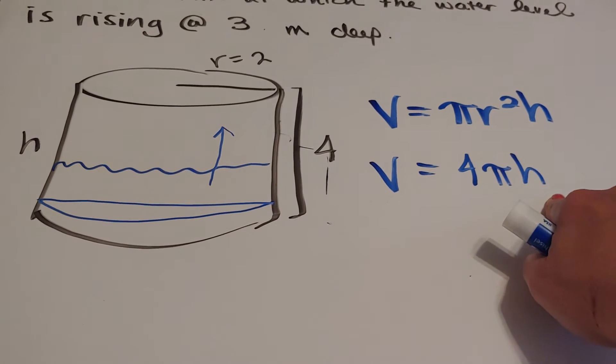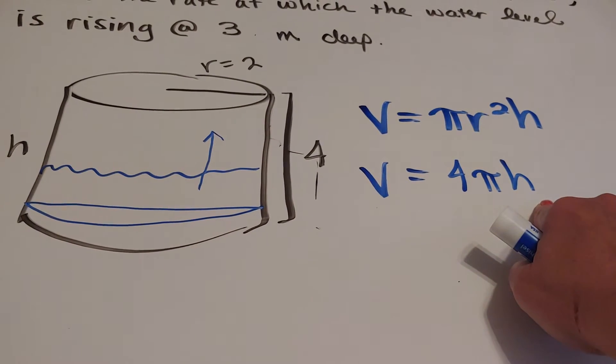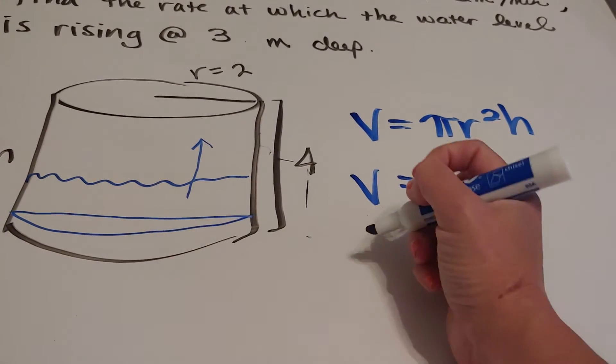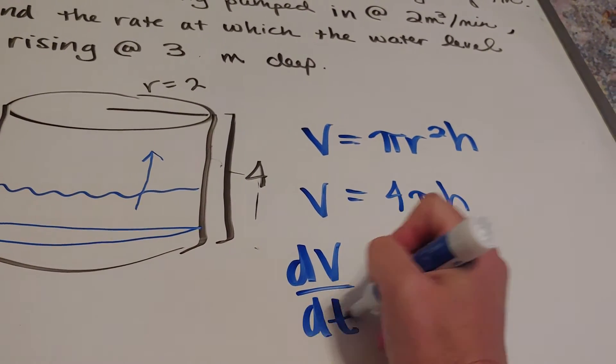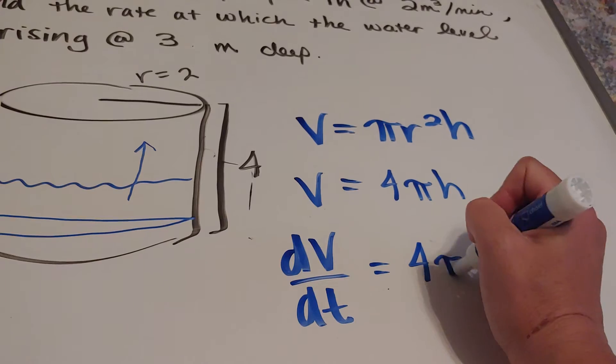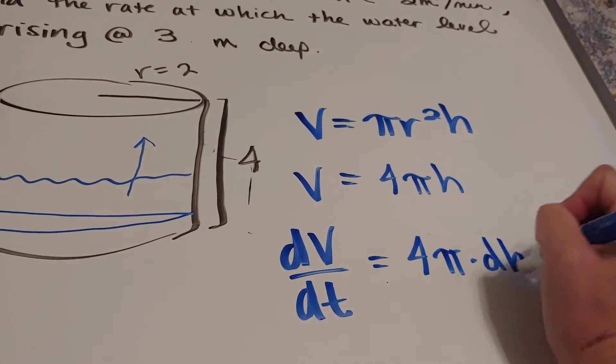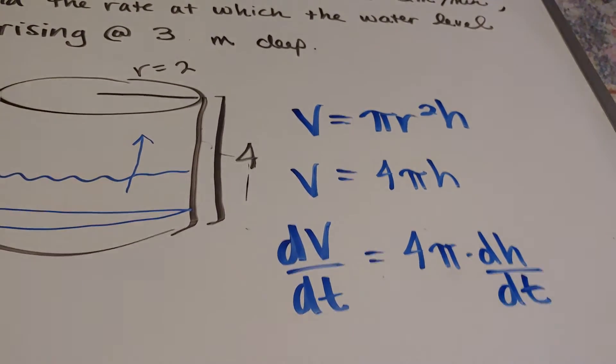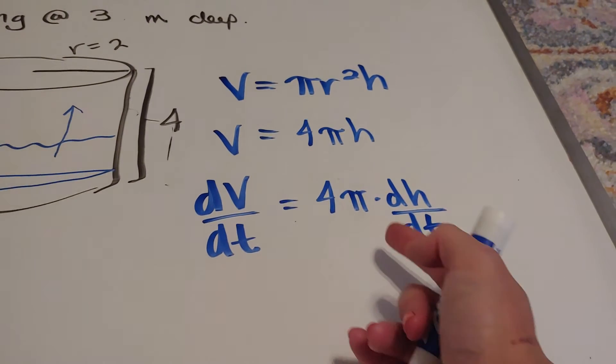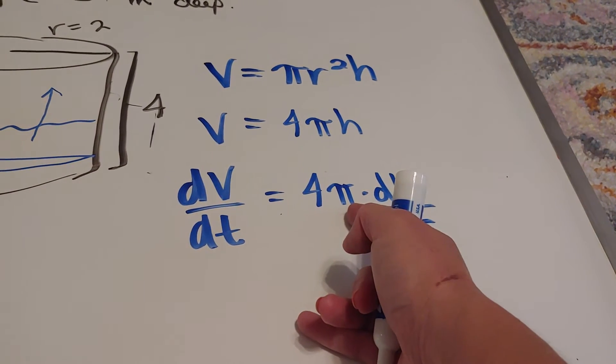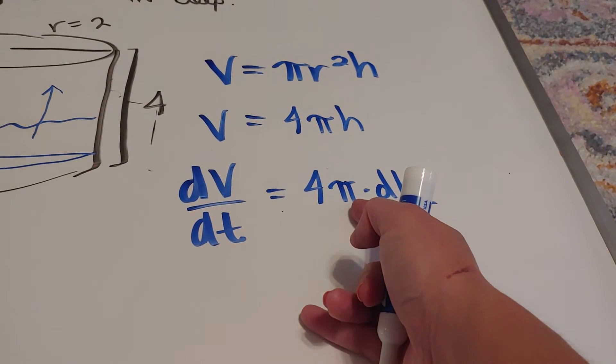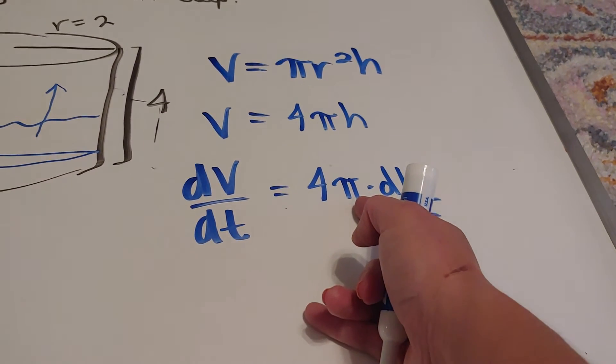Okay, now that I have my equation, I'm going to go ahead and take a derivative with respect to t. So dV/dt equals 4 pi dh/dt. Now some people might be thinking, Jen, how come we didn't do the product rule over here? Because pi is a constant. Okay, so this is a little big, bigger than 3, right? 3.14159.